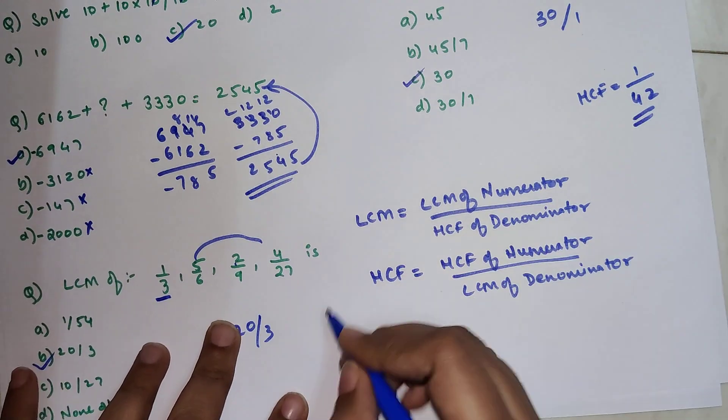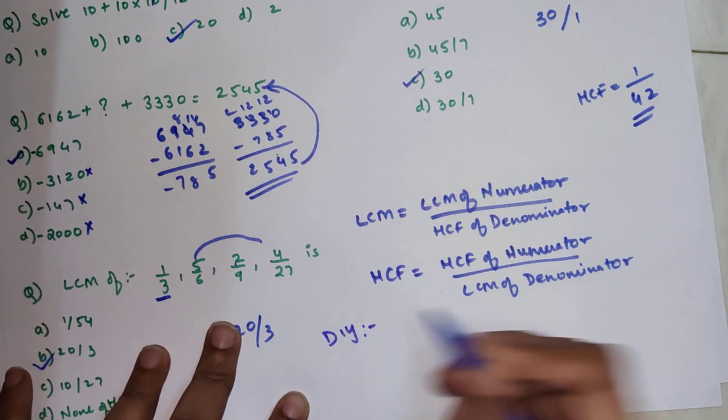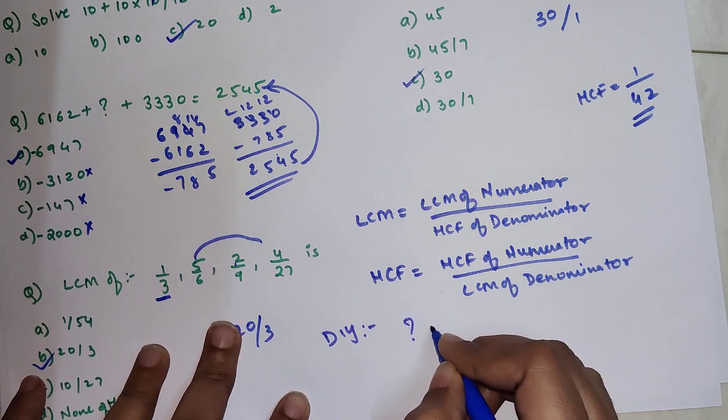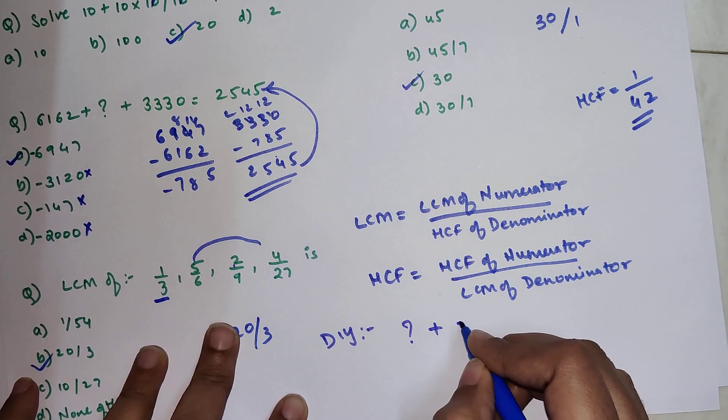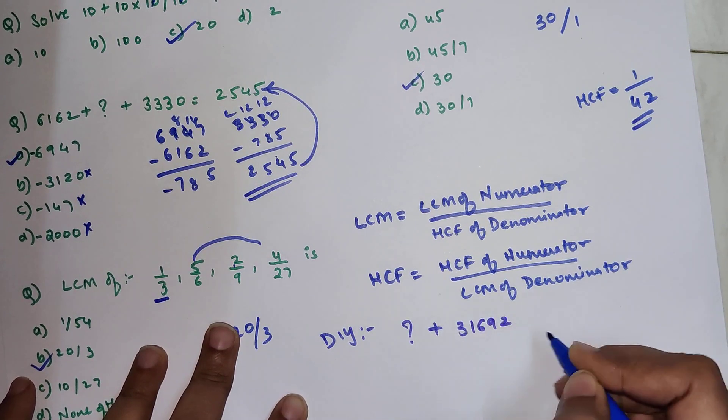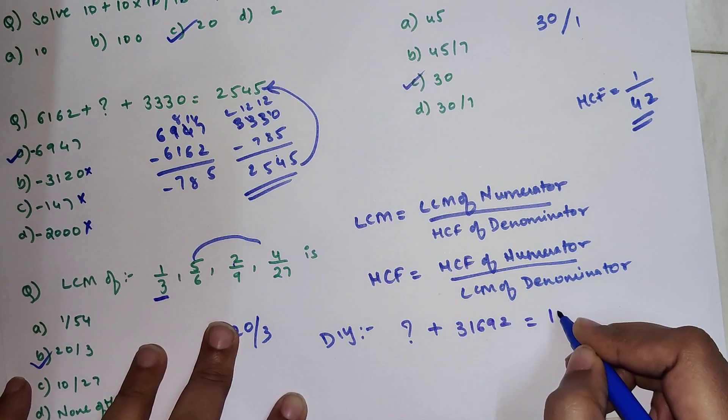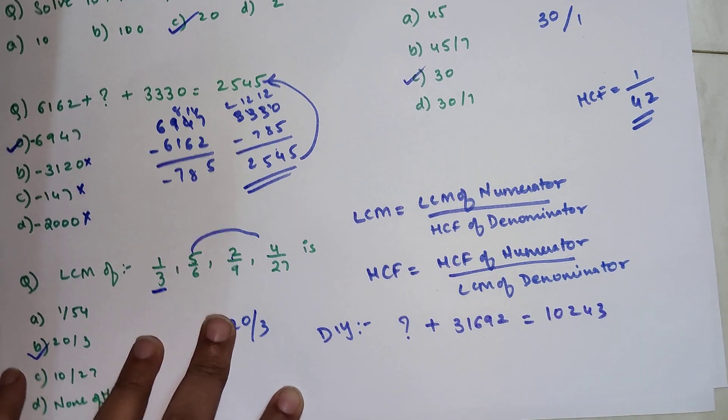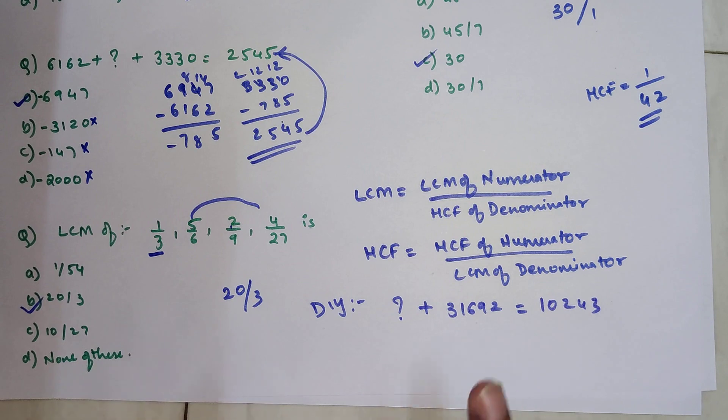So now students, time for your DIY. I want you all to solve what you should add: 2, 3, 1, 6, 9, 2, to get the answer as 1, 0, 2, 4, 3. And I am not going to give you any options because I want you to try solve it on your own. So do let me know your answers in the comment section. So that's it for today. I will see you soon in the next video.